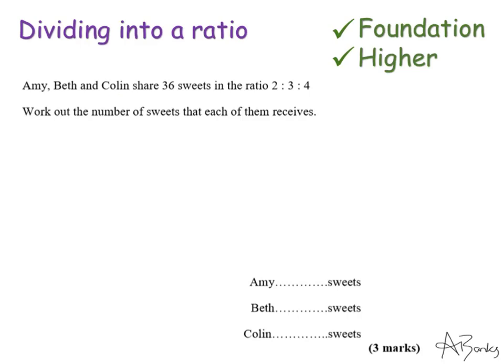I need to make sure that I don't mix up this order because the answer is asking me what each of them got. So what I'm going to do to start with is actually write A for Amy, B for Beth, and C for Colin, so I know which person gets what amount. So I'm going to write my ratio underneath. My ratio is 2 to 3 to 4.